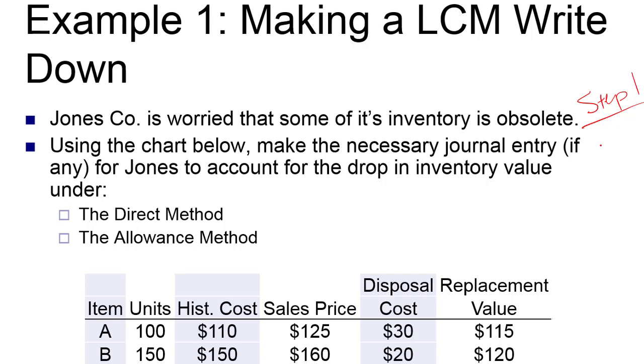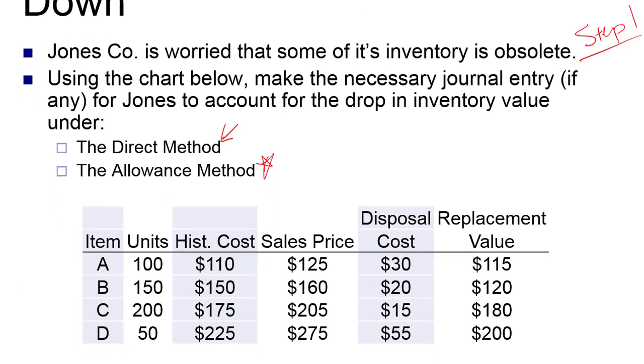Using the chart below, we want to make the necessary journal entry if any for Jones to account for the drop in inventory value under both the direct and the allowance methods. Remember, this allowance method is what FASB prefers, but most companies choose to use the direct method. For the purposes of learning, we'll make sure we've got them both. Here's our information. I'll give you a second to find your PowerPoint file or jot some of those numbers down.